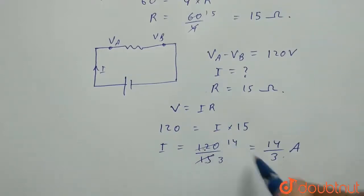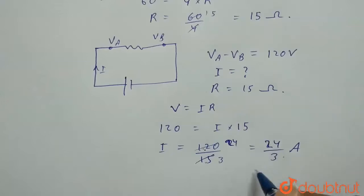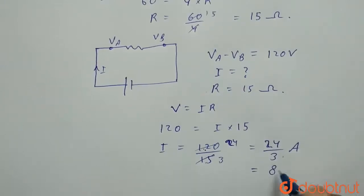Sorry, it will go by 24 times, so it will be 24 by 3. So 24 by 3 which will be 8 amperes.